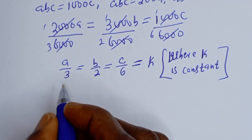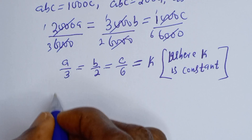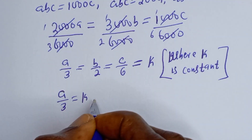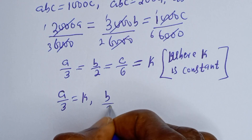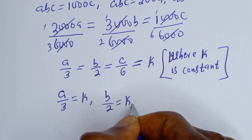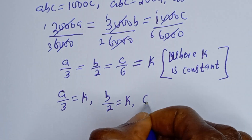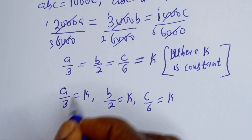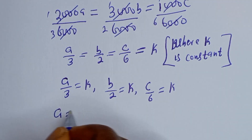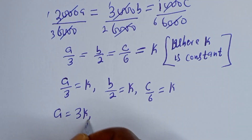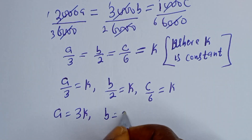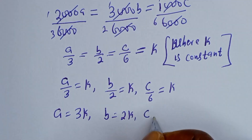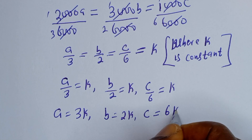From here, A over 3 equals K, B over 2 equals K, and C over 6 equals K. Therefore A is equal to 3K, B is equal to 2K, and C is equal to 6K.